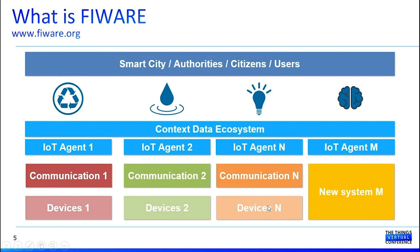If we have a look at the high-level architecture that could be used in FIWARE: you can integrate devices of many types, but not only devices — also any kind of data source coming from different systems. You can use the IoT agents in order to convert this data, these different protocols and different data exchange formats, into NGSI, which is the language understood by the platform. And on top of this common data, you can build any type of service or application for different usages and different users.